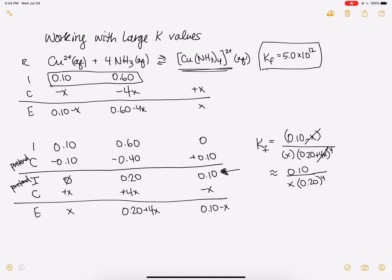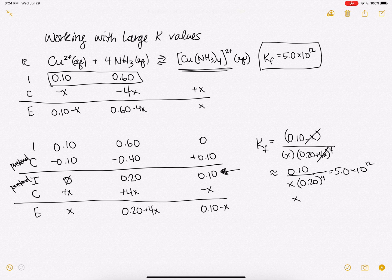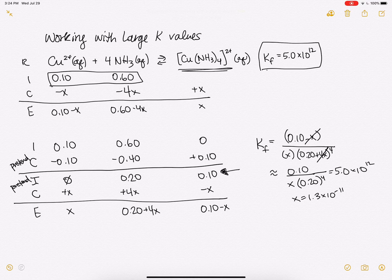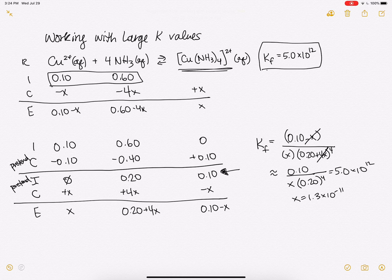So now, solving with our KF value, we can get our X value, 1.3 times 10 to the minus 11. And we can double check. Yes, indeed, X is very small compared to 0.1 or 0.2 that we were adding or subtracting it from.